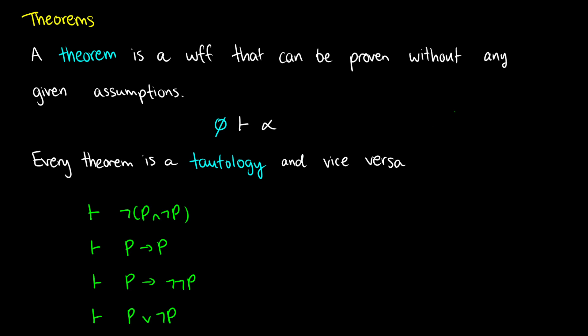For example, we don't need any given assumptions to know that ¬(P∧¬P) is a theorem and a tautology. P→P, P→¬¬P, and P∨¬P — those are all given. But if we want to use these as theorems we still need to prove them. So we need to essentially start with no assumptions whatsoever and then create a proof.